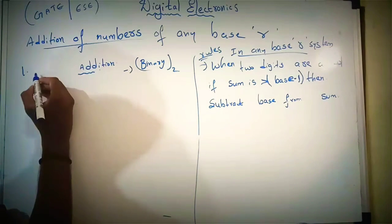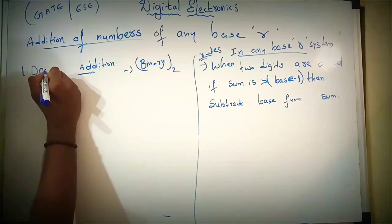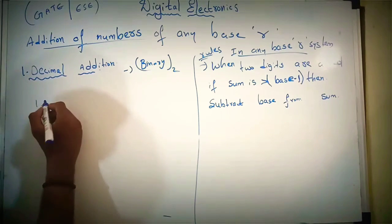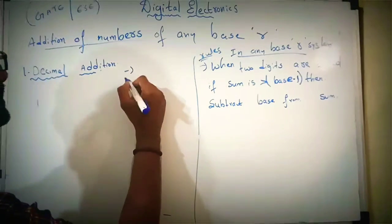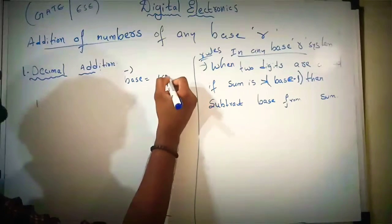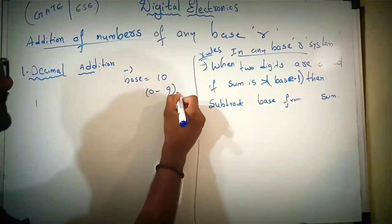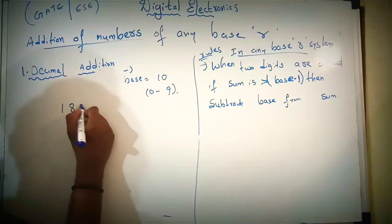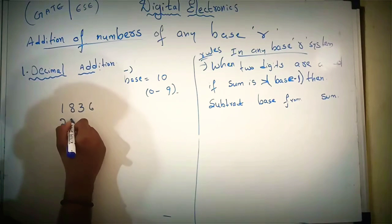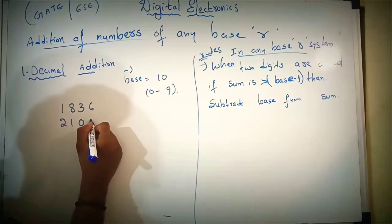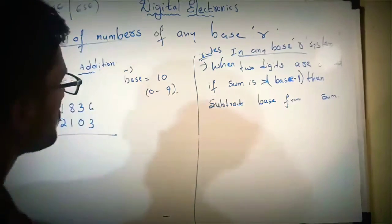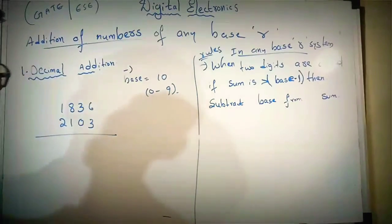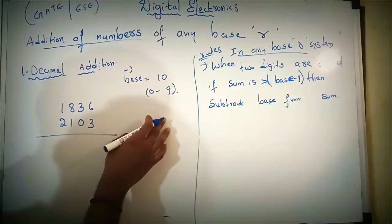Now let's see the decimal addition. In the decimal number system, the base is 10, so the digits are from 0 to 9. Here also, when the sum is greater than base minus 1, simply subtract the base from the sum.